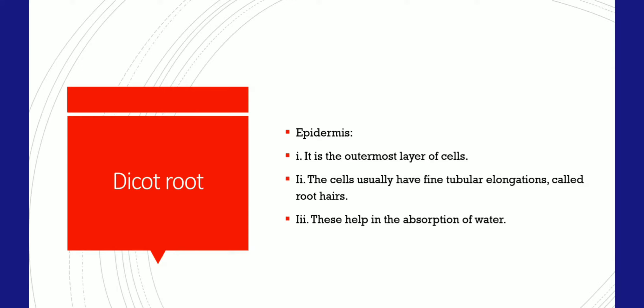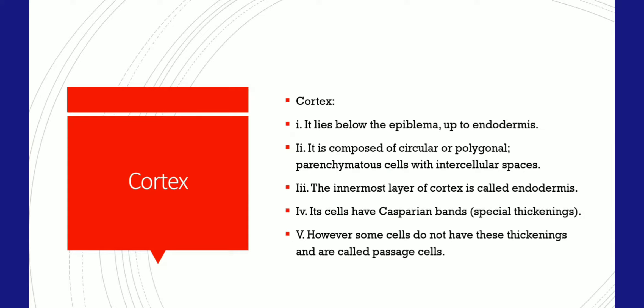Next, cortex is present. It is parenchymatous with intercellular spaces, composed of circular or polygonal cells. It lies just below the epiblema up to the endodermis.